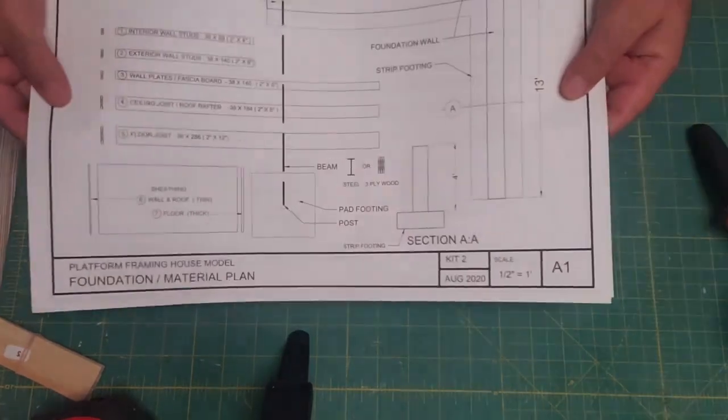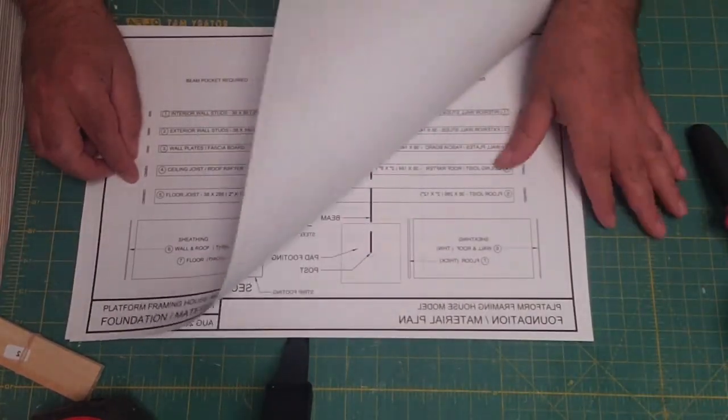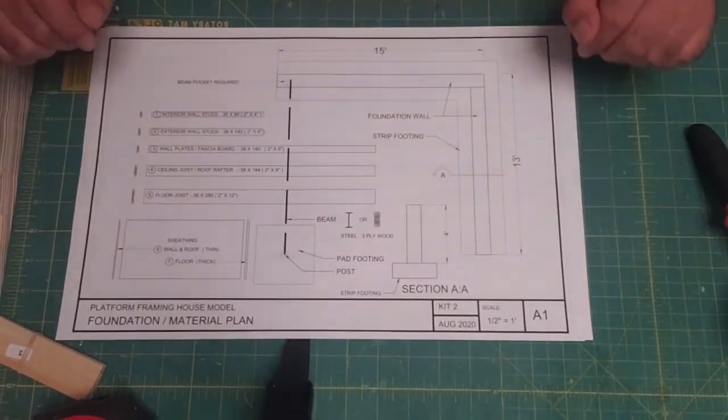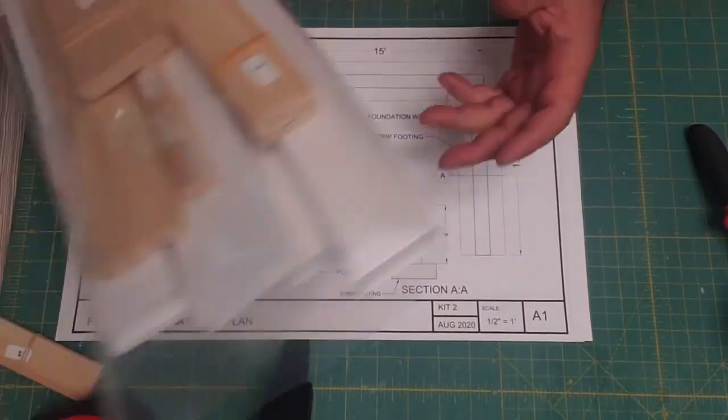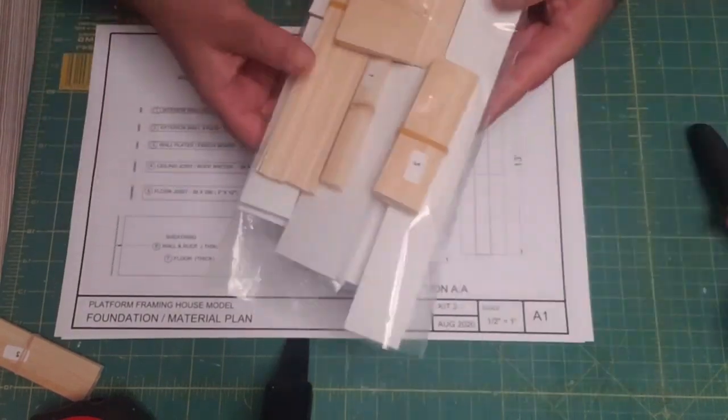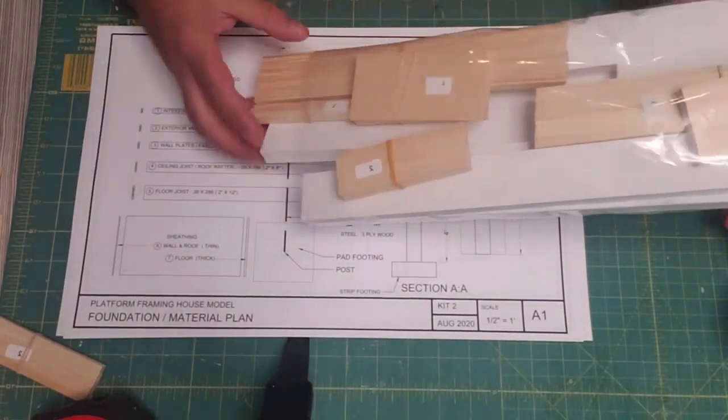You should have by now a set of plans showing different parts of the building and a layout plan. We're going to start with that. You should hopefully have received your kit now. And if we notice, let's open that up and take a look at some of the components in here.